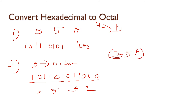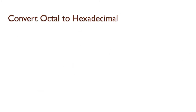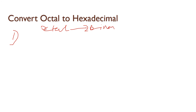The answer for the octal conversion — this is the exact value. The octal value is 5, 5, 3, 2. Next step: how to convert octal to hexadecimal. There are two steps. First step is the octal value to binary conversion.